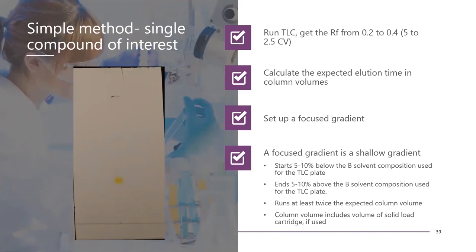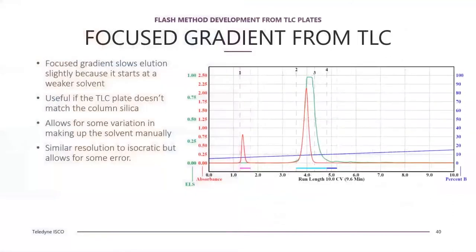You can also run a focus gradient from around 5 to 10% B solvent below the TLC solvent composition to 5 to 10% higher. This allows for some variation in how the solvent is made by the instrument and differences between the TLC and the column. Set the gradient length to be about twice the expected CV, and include the volume of any solid load cartridge in the total column volume. This run shows UV and evaporative light scattering detection — the focus gradient delayed elution slightly but resolution is similar to an isocratic column.